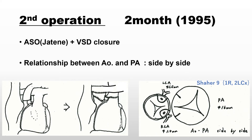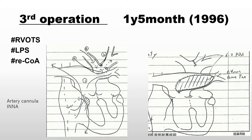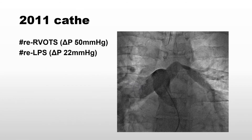That was successful and the baby was okay. But then at one year and five months, in 1996, the patient developed left ventricular outflow tract obstruction, left pulmonary artery stenosis, and some pressure gradient between the ascending aorta and descending aorta — that was re-coarctation of the aorta. A third operation was performed to fix the left ventricular outflow tract and apply a big patch on the left pulmonary arteries.